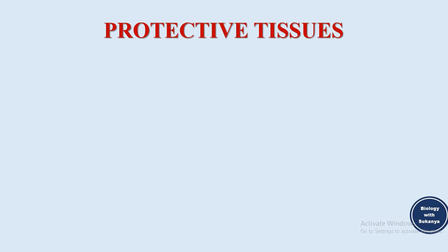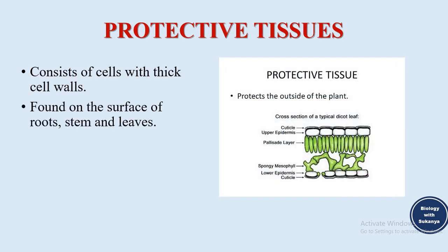Protective tissues consist of cells with thick cell walls. They are found on the surface of roots, stem and leaves. As the name suggests, protective tissues provide protection to the plant. Looking at the diagram, it protects the outside of the plant from any mechanical force coming from the environment.